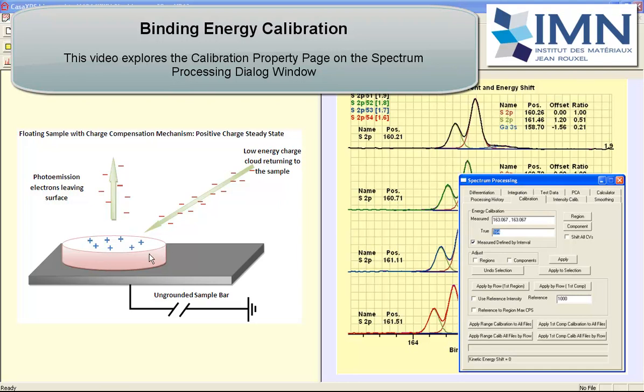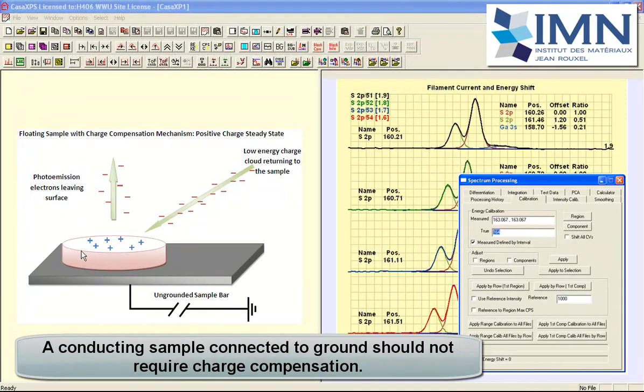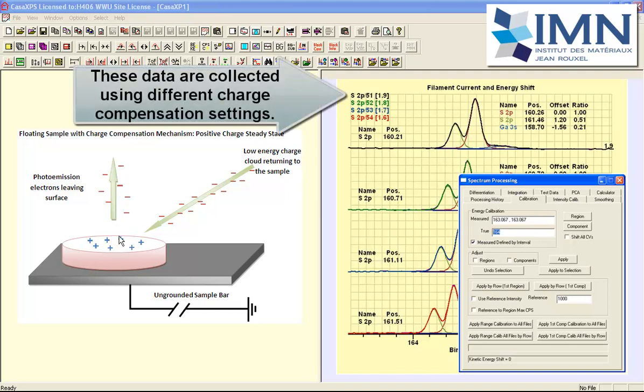The XPS of insulators represents a problem that must be solved in that electrons emitted from the surface represent negative charges. As a result of having an insulating material, a positive charge will build up on the surface and the positive charge attracts the electrons back towards the surface. This means that electrons would have a different kinetic energy depending on the charge that has accumulated on the surface.